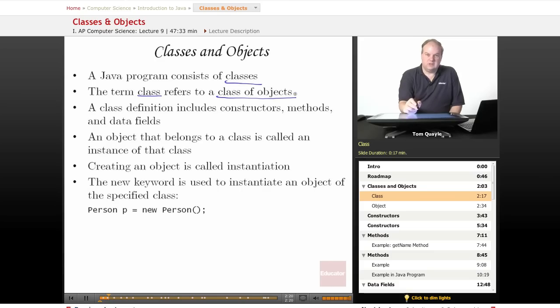A class definition includes three pieces: constructors, methods, and data fields. And we'll look at each of those in detail later in this lesson. An object that belongs to a class is called an instance of that class, and creating an object of a class is called instantiation—that is, creating an instance of a class.